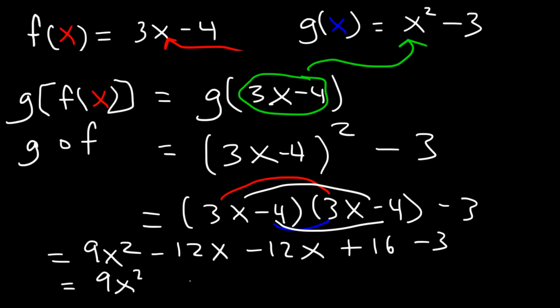Negative 12 minus 12 is negative 24. 16 minus 3 is 13. So this is the value of g of f of x.